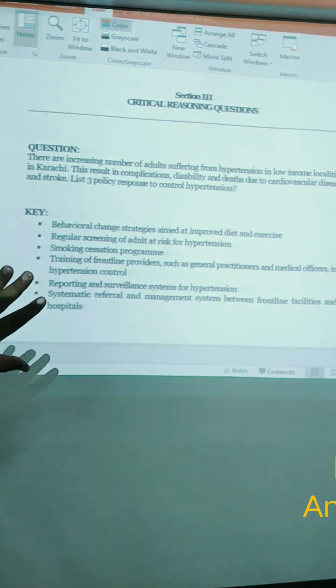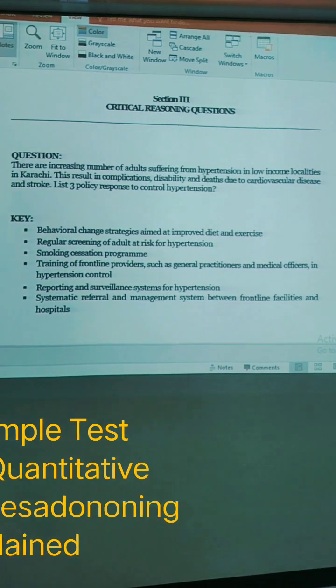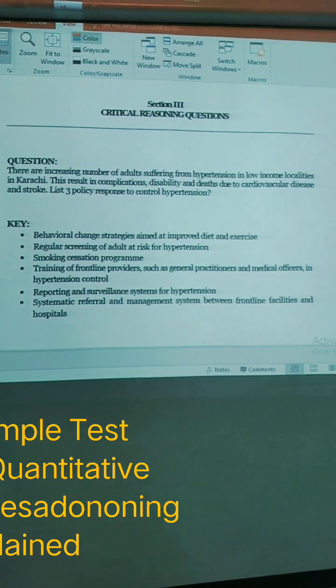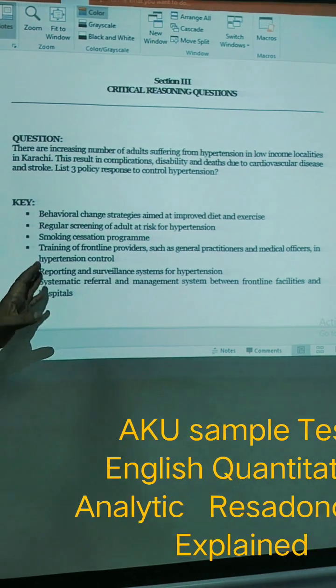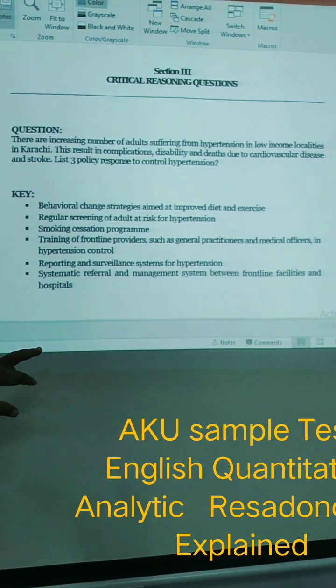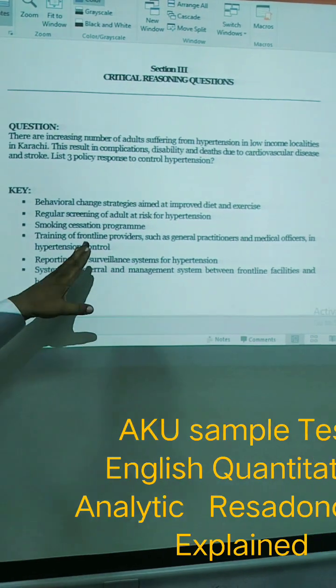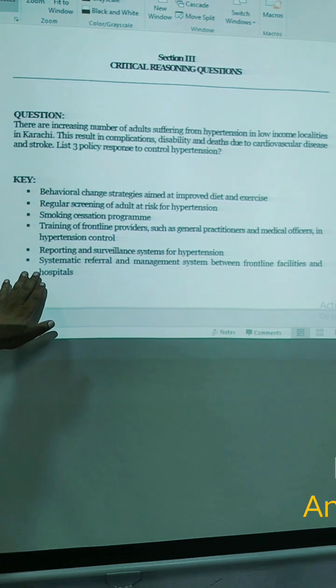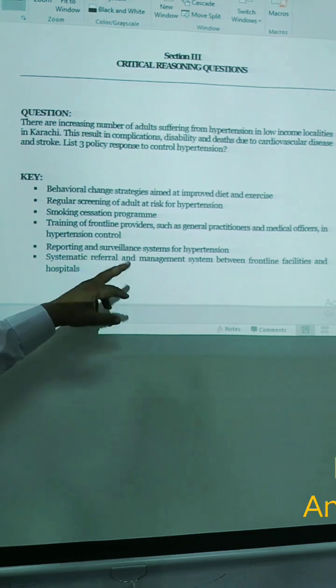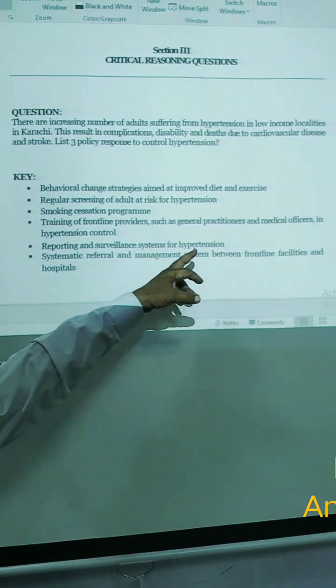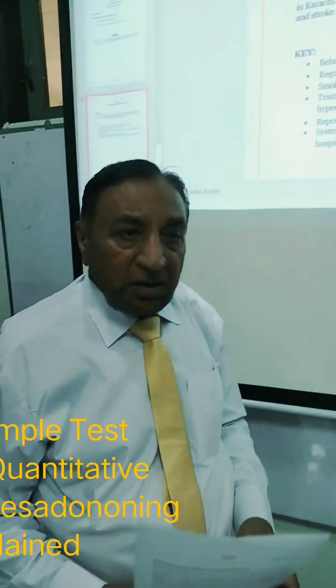This is basically critical thinking. There are increasing numbers of adults suffering from hypertension in a community with various disabilities and other complications. What are three policy responses to control hypertension? They have given six but the best ones are behavioral change, reporting and surveillance system, and third is training of frontline workers and general practitioners and medical officers in hypertension control. So these three will be the correct answers.